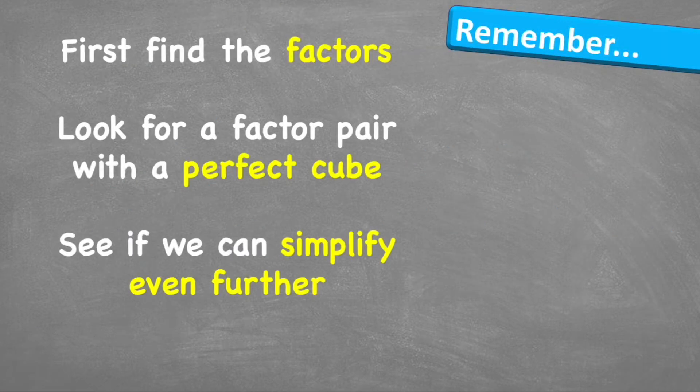So what do we need to remember? First we're going to find the factors. Then we're going to look for any factor pairs which are a perfect cube. That part's really important. And then we're going to see if we can simplify it any further.